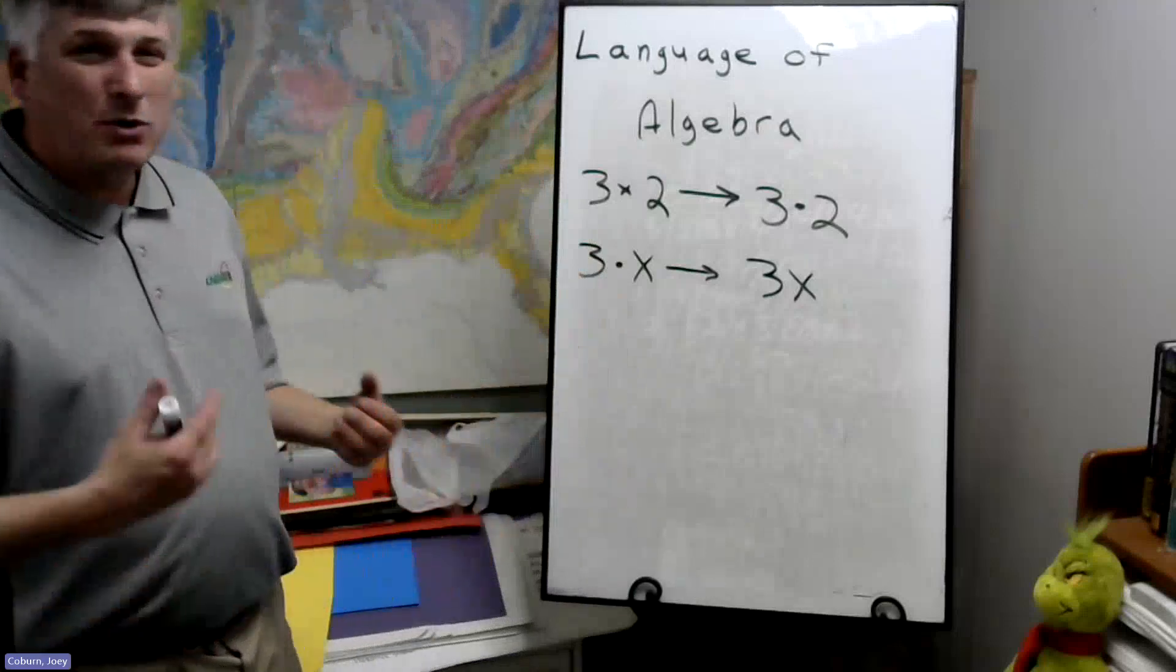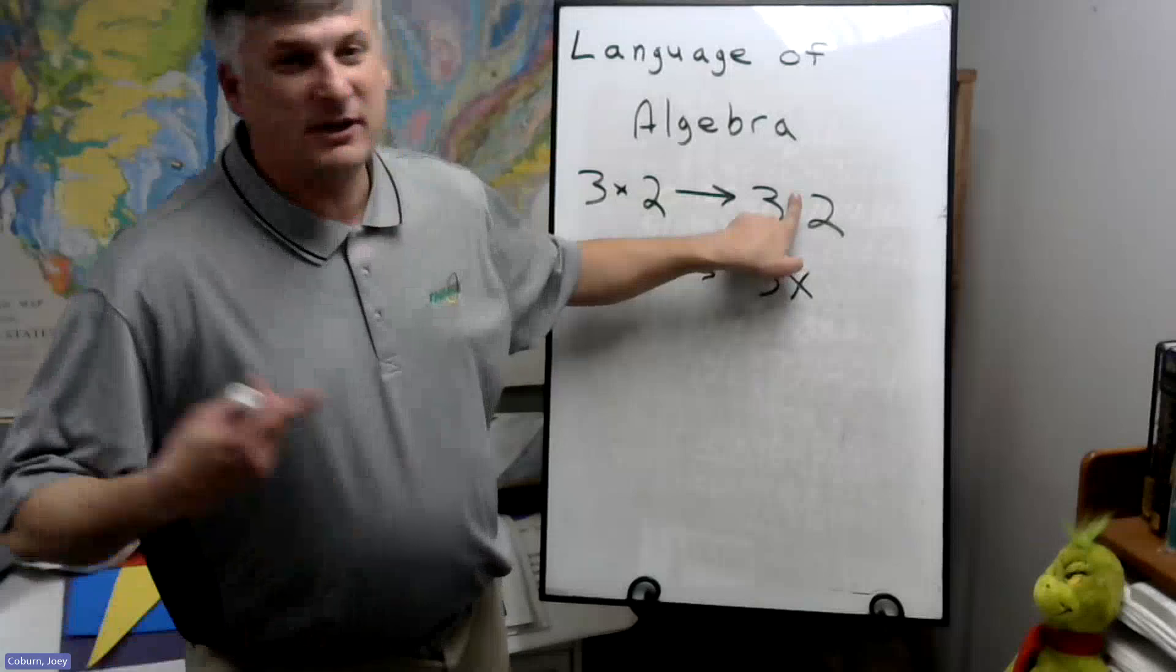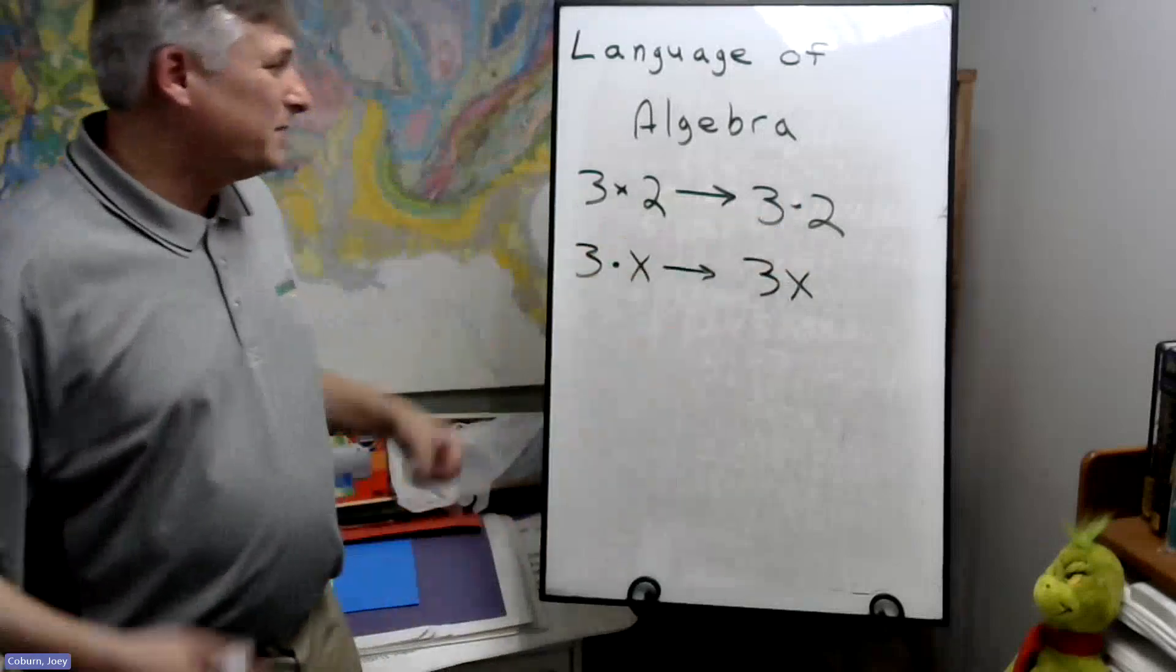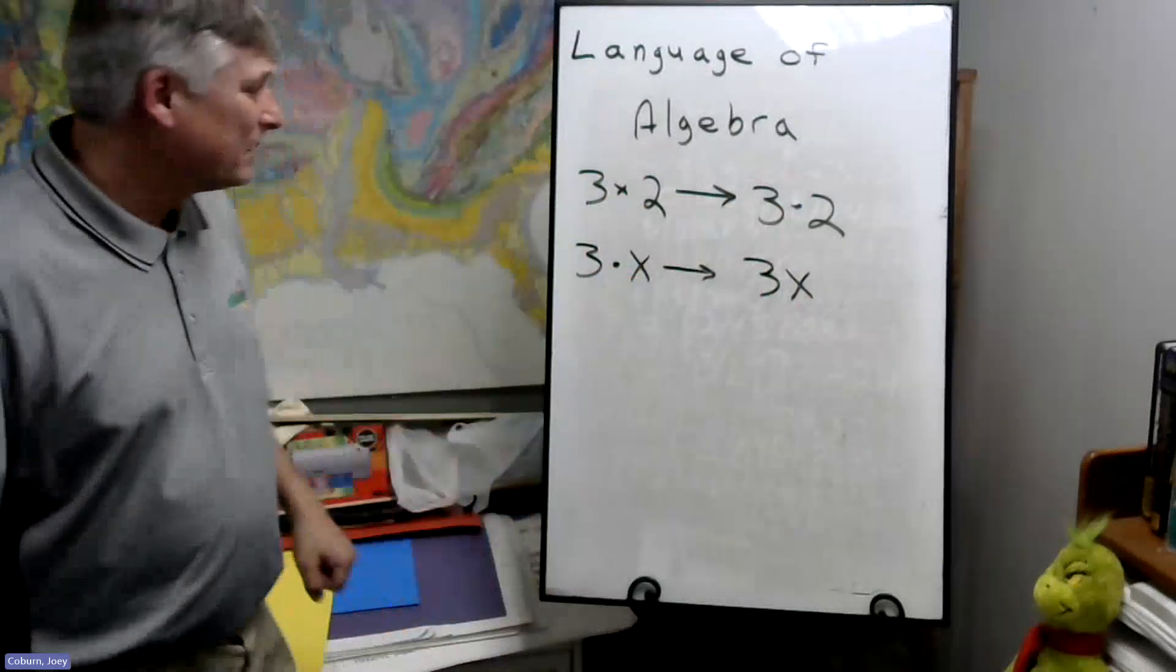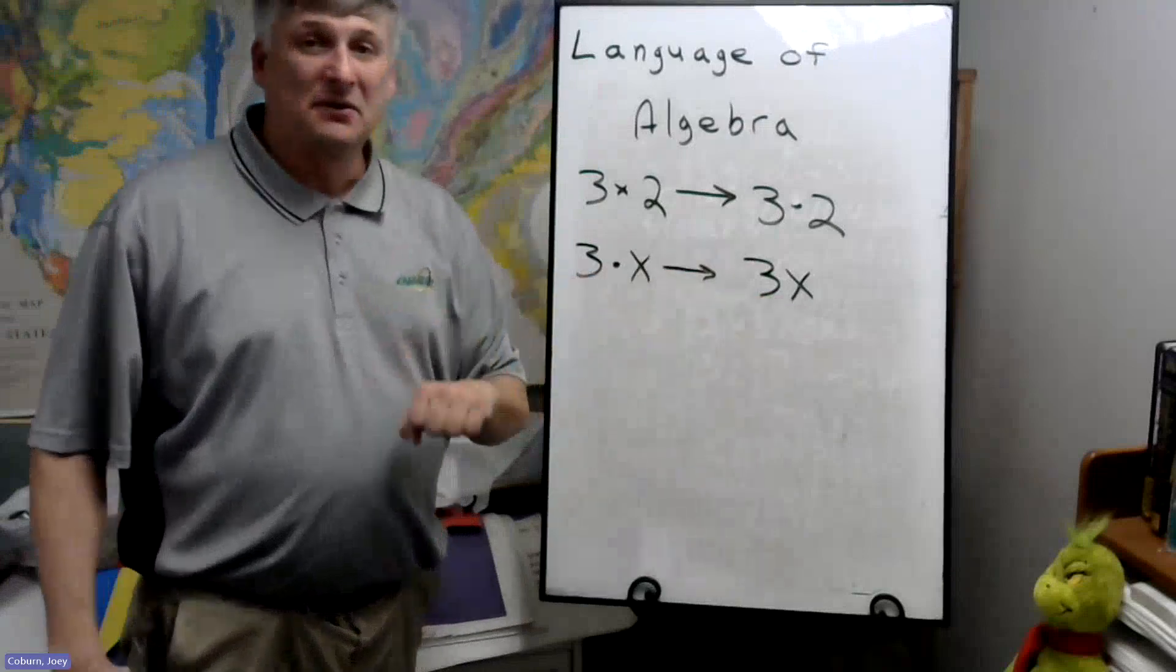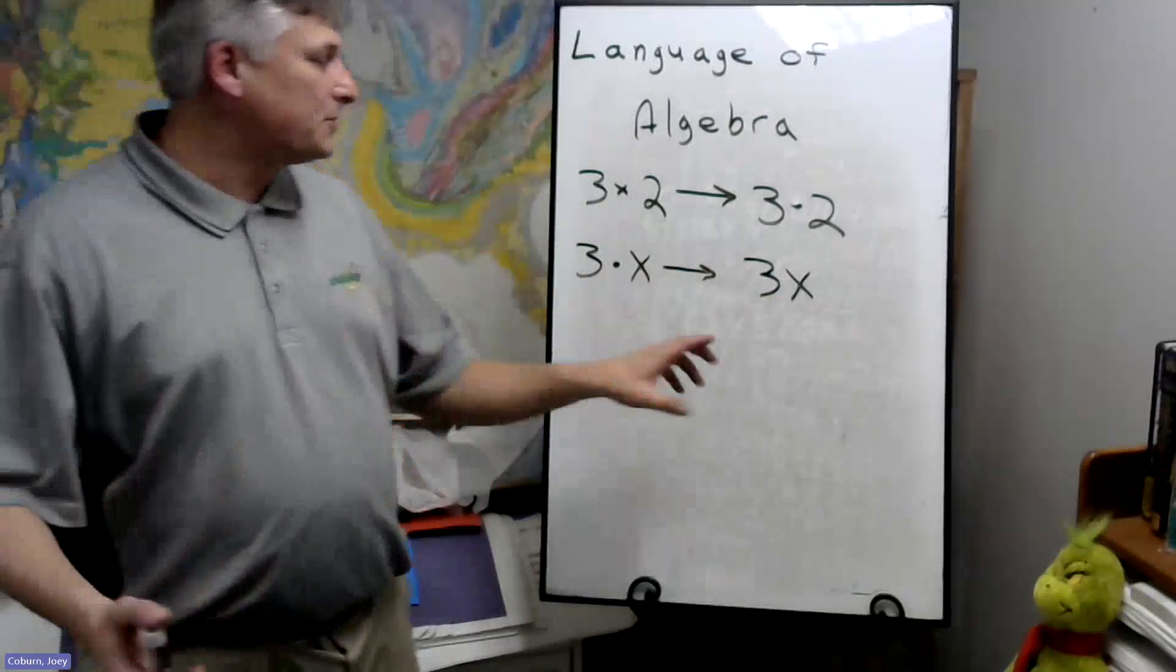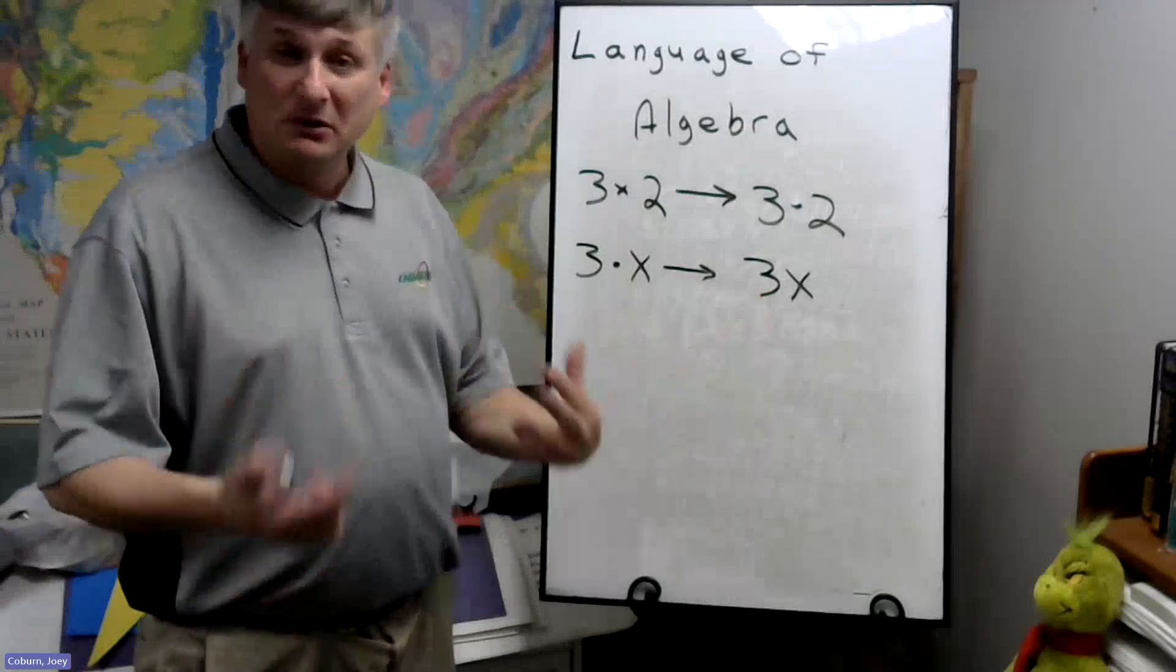These are the same thing. Now we won't do this with number times number because if you got rid of the dot, it looks like the number 32. So when you have number times number, you got to put in the multiplication dot. But for this case, we just place the number next to X and usually we're always going to put the number to the left or in front of X.